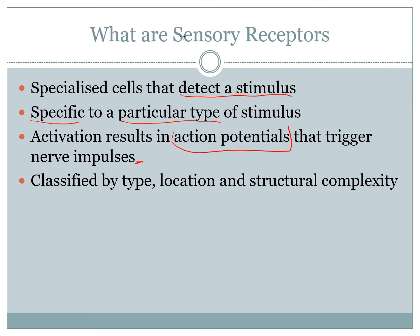Every single receptor works the same way. You can classify receptors by type, by location — whether they're ectoreceptors or interoreceptors, picking up stimulus from the outside or inside of the body — or by their structural complexity: general sensors or special sensors.